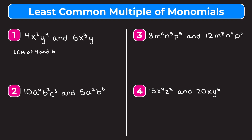To do that I'll write out some multiples of 4 and 6. The multiples of 4 are 4, 8, 12, 16, 20, and some multiples of 6 are 6, 12, 18, 24, 30. We want the smallest one they have in common, which is 12. So the least common multiple of 4 and 6 is 12.